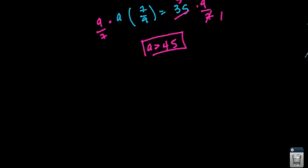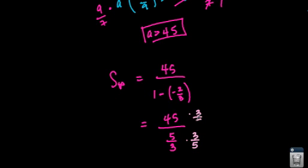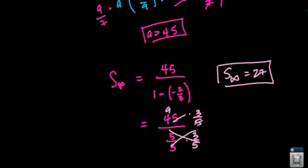Now find the sum to infinity. The sum to infinity formula is the starting value divided by (1 minus the common ratio). So that's 45 divided by (1 minus negative 2/3), which equals 45 divided by 5/3, or 45 times 3/5. That gives a sum to infinity of 27.